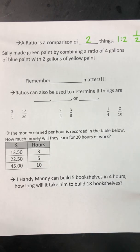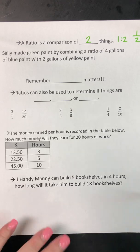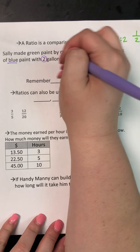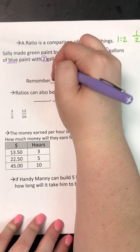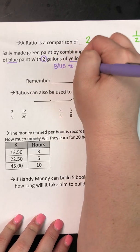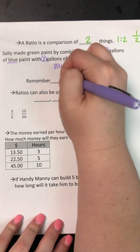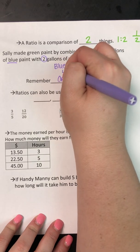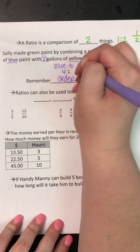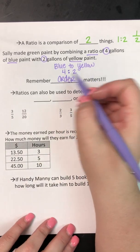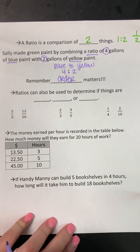Sally made green paint by combining a ratio of four gallons of blue with two gallons of yellow. So our ratio is blue to yellow, and remember, order matters. Blue was four, and yellow is two. So our ratio will be four to two. It was said blue first, so blue goes first.